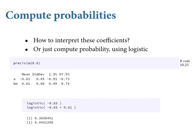To get to absolute effects: to get the prediction for a female application, it's just the logistic of minus 0.83 — about 30% probability of admission on average across all departments. For a male application, it's the logistic of the intercept plus the beta coefficient times 1 — about 45%. So there's about a 15% absolute difference. You want to be able to do both relative shark and absolute penguin.